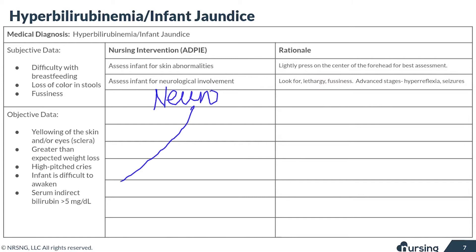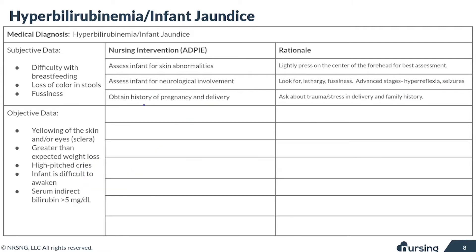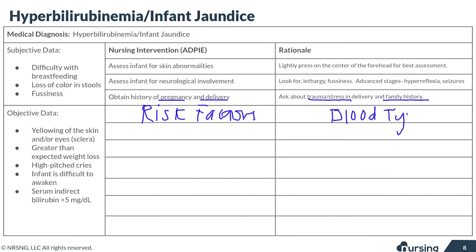Remember the two symptoms we mentioned: the high-pitched cry and increased lethargy. But in more advanced stages of brain damage, you could also see hyperreflexia and seizures. You want to get a history from the parents and find out what the pregnancy and the delivery were like — ask about trauma and stress in the delivery, as well as family history, and pay attention to whether mom and baby had different blood types.